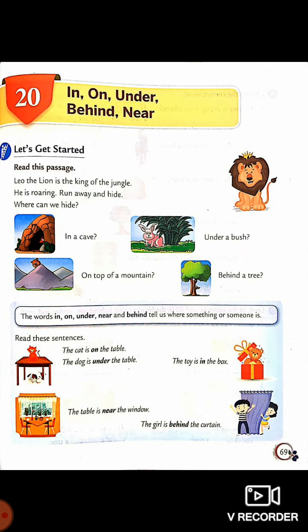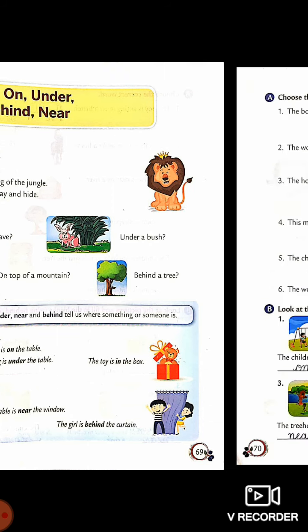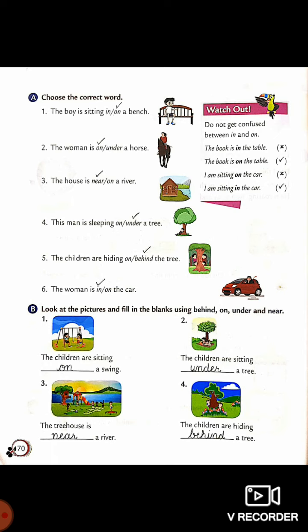Now we have the book exercise. We will start from Part A on page 70 — choose the correct word. The boy is sitting on a bench, since it is on the surface. The woman is on a horse. The house is near a river — it is not on the surface of the river, it is just near. This man is sleeping under a tree. The children are hiding behind the tree. The woman is in the car.